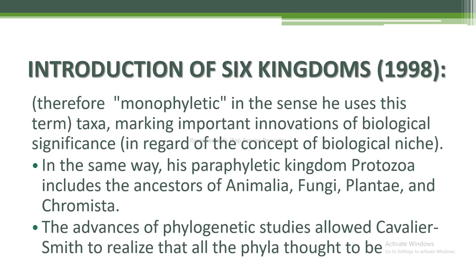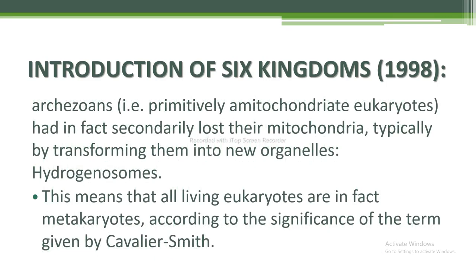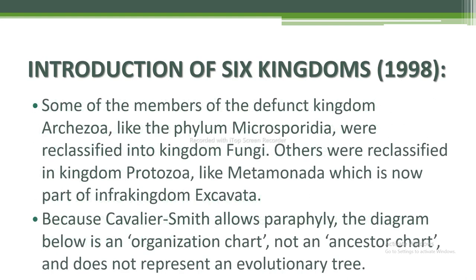In the same way, his paraphyletic kingdom Protozoa includes the ancestors of Animalia, Fungi, Plantae, and Chromista. Advances of phylogenetic studies allowed Cavalier-Smith to realize that the phyla thought to be archizoans — for example, primitively amitochondriate eukaryotes — had in fact secondarily lost their mitochondria, typically by transforming them into new organelles called hydrogenosomes. This means all living eukaryotes are in fact metakaryotes. Some members of the defunct kingdom Archizoans, like the phylum Microsporidia, were reclassified into kingdom Fungi.